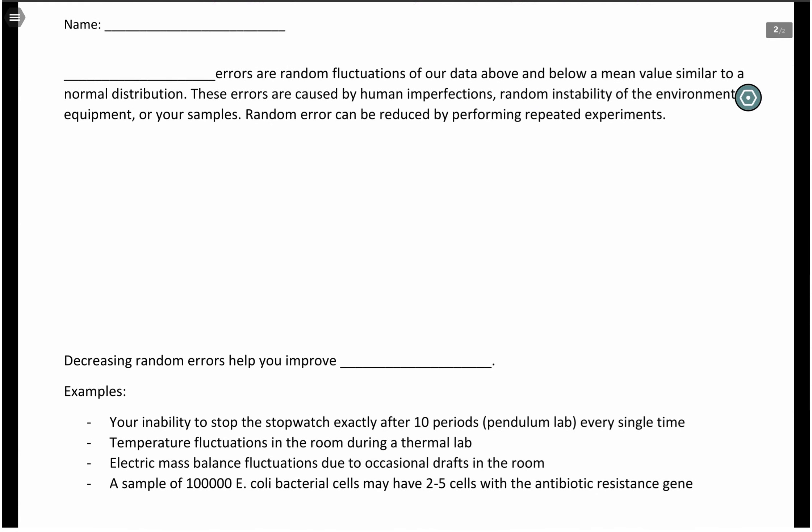What about random errors? Random errors have to do with statistical fluctuations. They have to do with things that are quite outside of our control. Think of when you're collecting data, you get this random distribution of data. Some of the times they follow a pattern called normal distribution. So something that kind of looks like this. So think of the middle as your average. And then all of these are the fluctuation in your data. Of course, more of your data are going to align in the middle, but some of them are going to deviate away. These may be caused due to human imperfections, such as reaction time, as we talked about in our class, random instability of the environment, equipment, or might have to do with your samples.